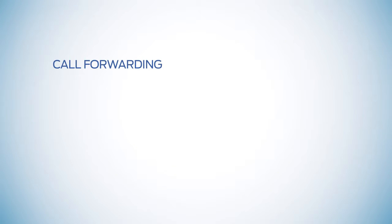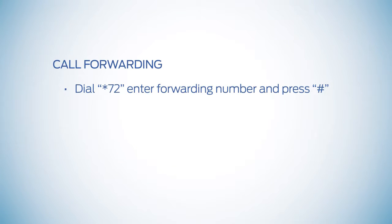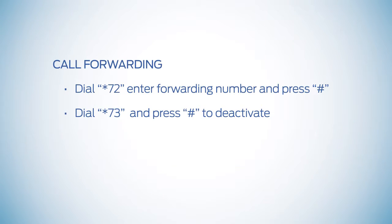To send calls to a mobile phone or other number, dial star 72, enter the forwarding phone number, and press the pound sign to activate. To deactivate, dial star 73 and the pound sign from your home phone.